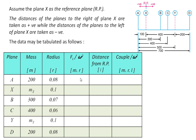Now we need to calculate the centrifugal force. Centrifugal force, as discussed earlier, is the product of mass and radius in this case, as it is Fc divided by omega square. So for mass A it will be 200 multiplied by 0.08, which gives 16. For mass X it will be 0.1 into mass of X. Mass B will be 21, mass C will be 24. For mass Y it will be 0.1 into mass of Y, and for mass D it will again be 16.